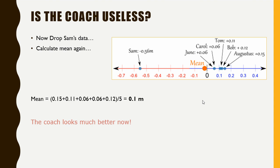Now let's drop Sam's performance out of the data and recalculate the mean. Then we find that the mean is a positive 0.1 meter. Now that makes a lot of sense and it shows that the performance of the coach is much better. But understand that outlier is a part of the data and we just cannot remove it like that, especially when it's affecting the result in this way.